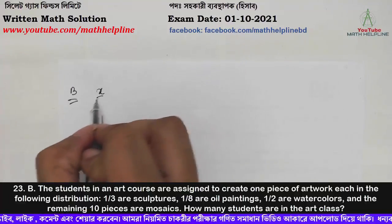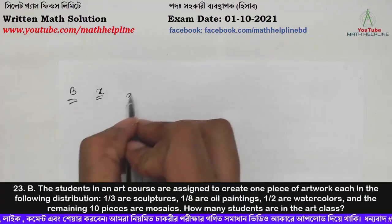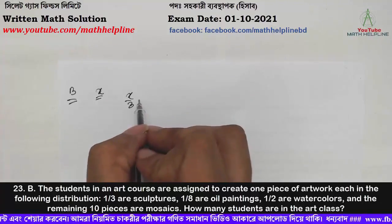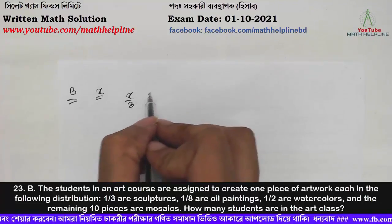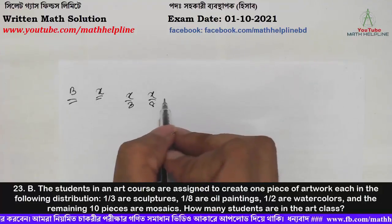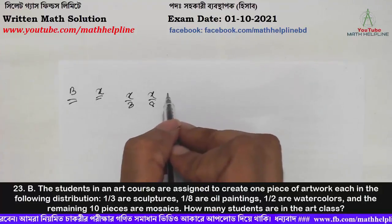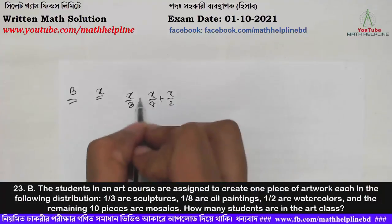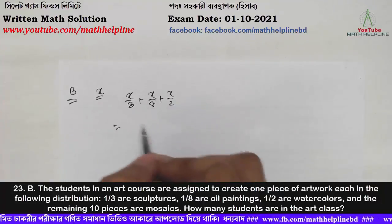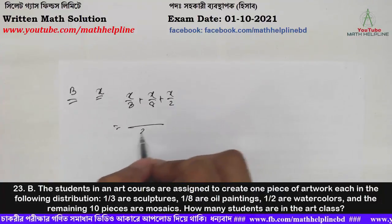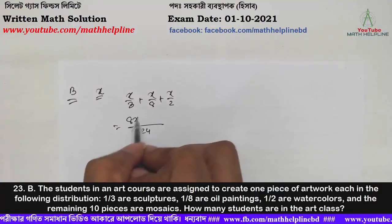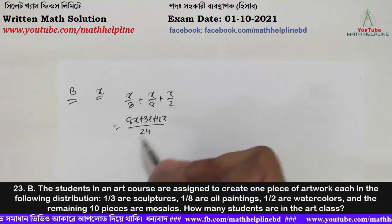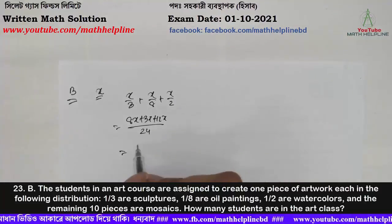Let the total number of students be x. Then x/3 are sculptures, x/8 are oil paintings, and x/2 are watercolours. Using common denominator 24: 8x plus 3x plus 12x, then adding the remaining 10 mosaics and solving for x gives 24.